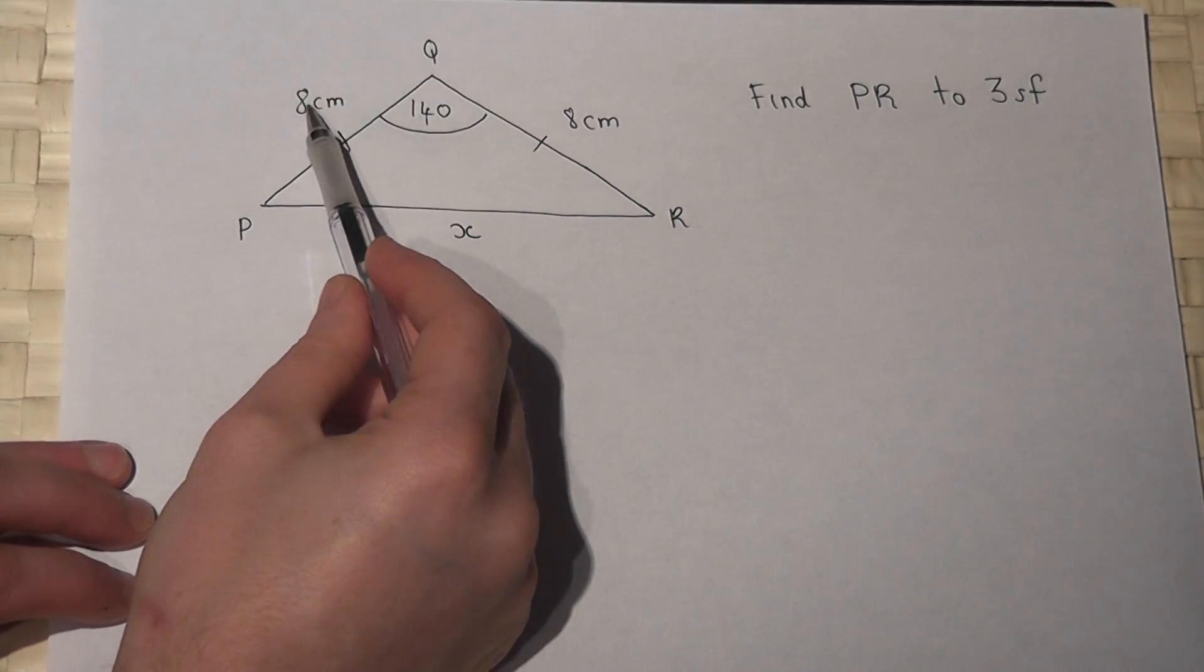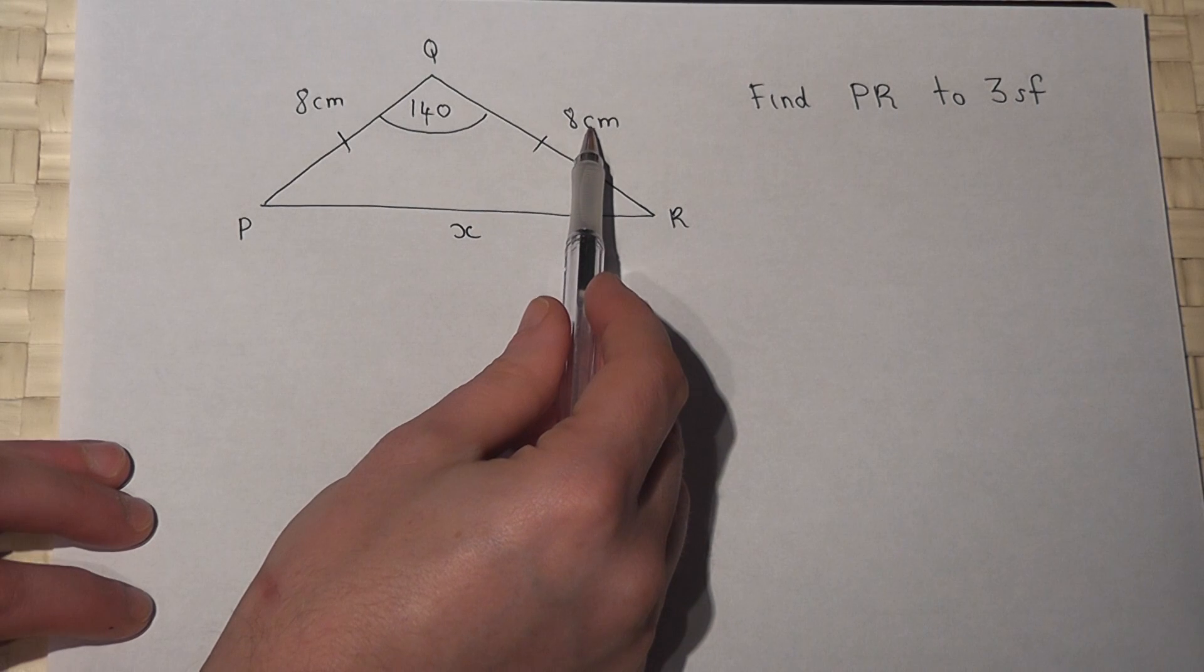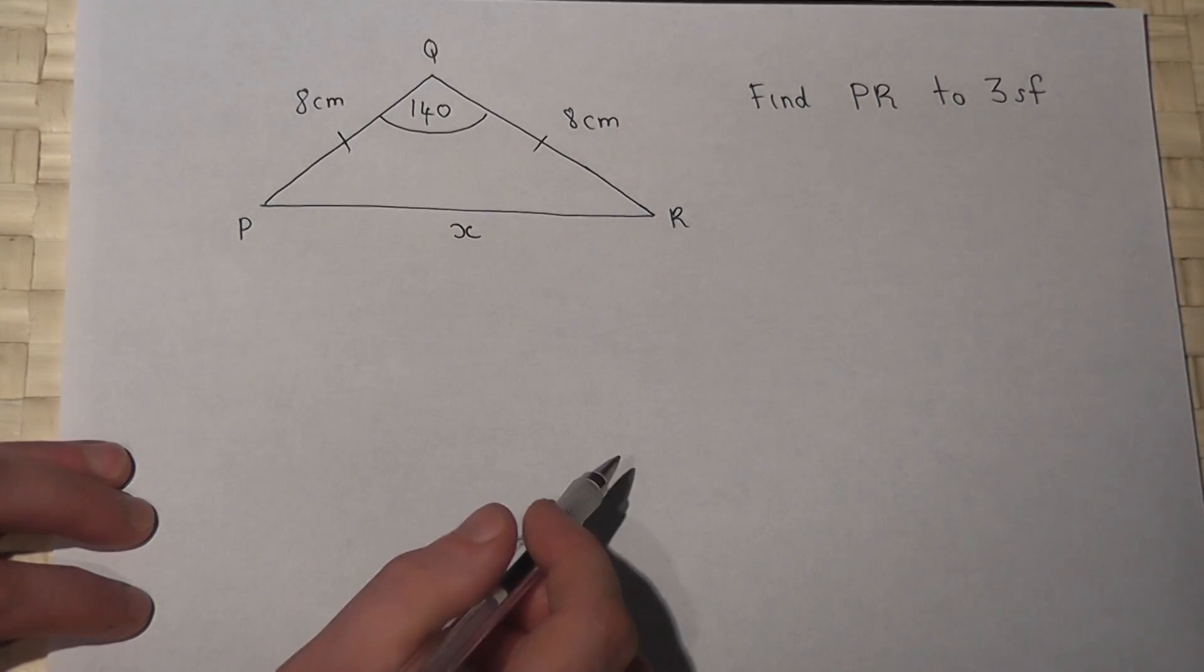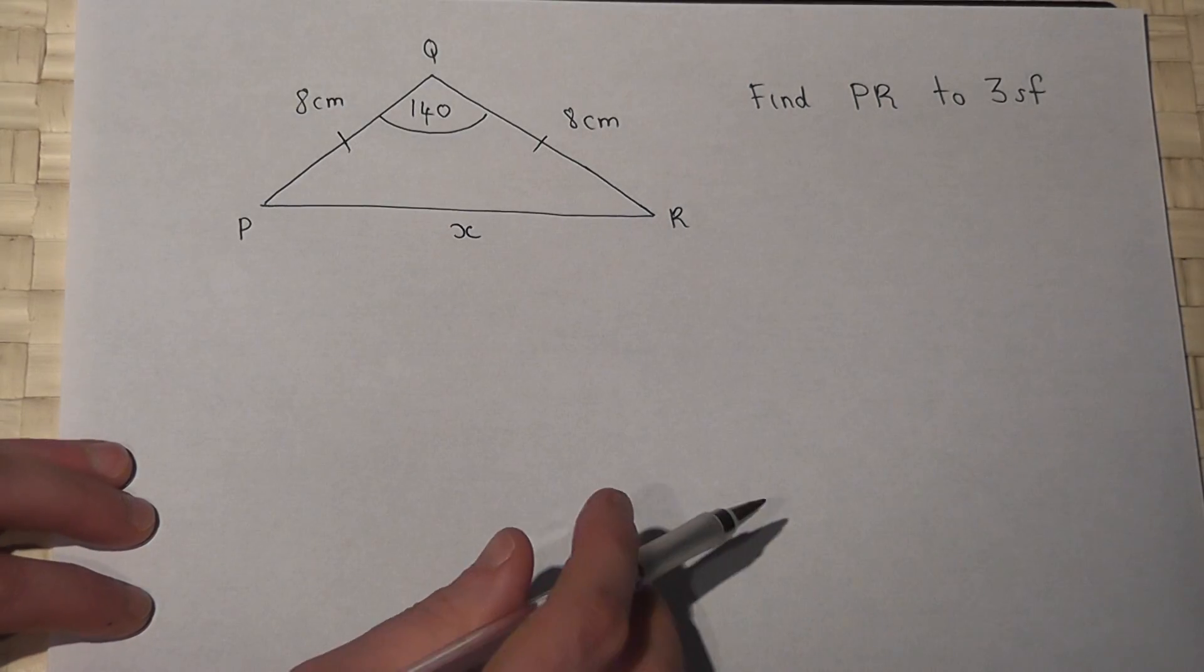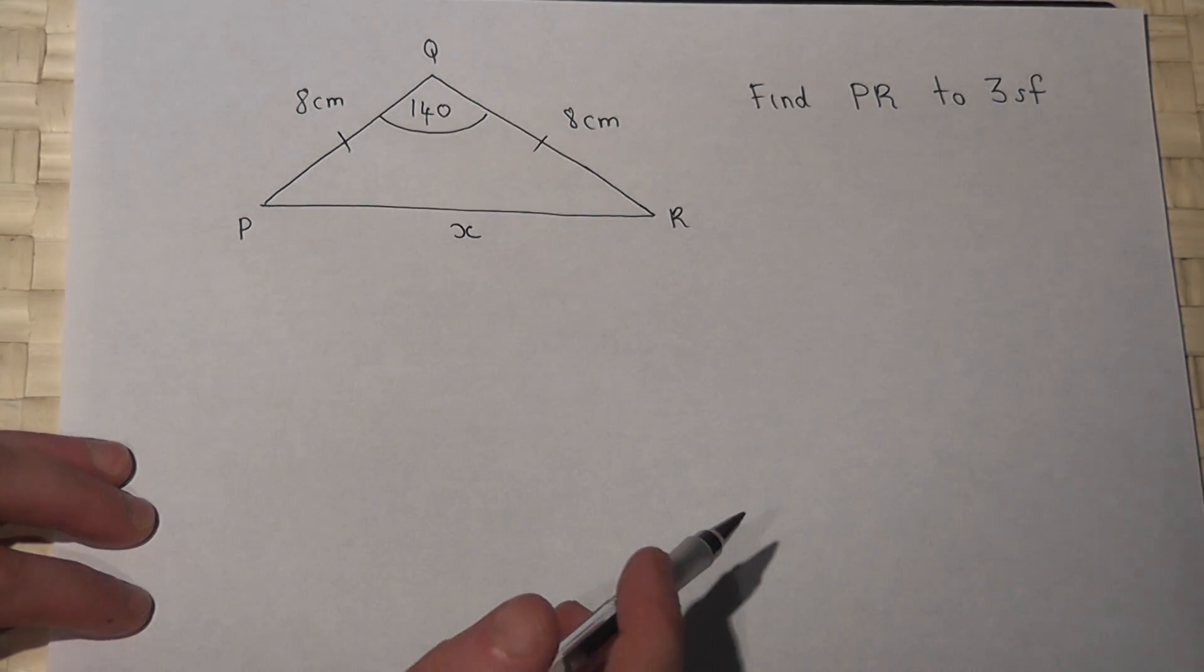And because I know side angle side, and want the side opposite the angle, I can use the cosine rule for this, though there are different methods you could use.